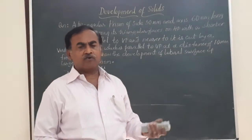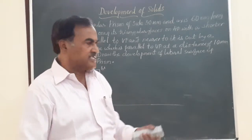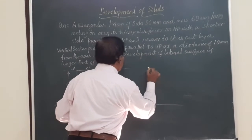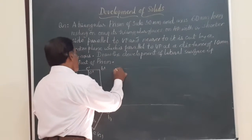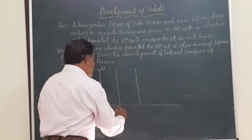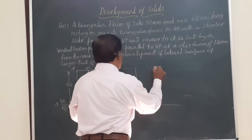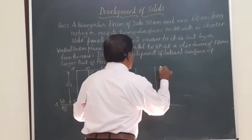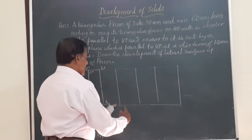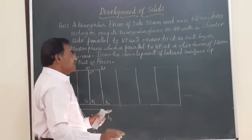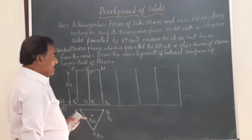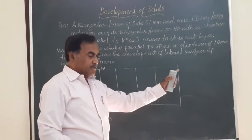Now let us draw the development assuming the solid is not cut by any section. The triangular prism has got three rectangles on its lateral surface. So I am going to mark three rectangles each having width equal to 30 mm and height equal to 60 mm. The overall height is 60 and the total width is 30 plus 30 plus 30, which is 90 mm. Before I mark A, A1, B1 etc., let me mark the section plane.